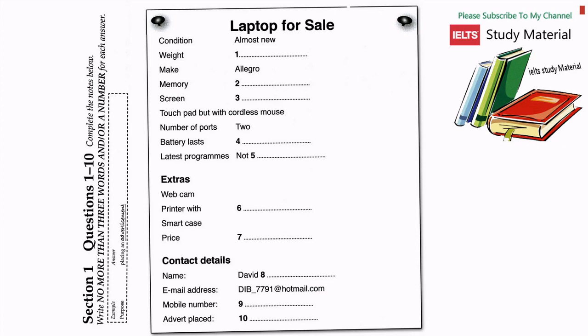Can I take some contact details for the advert? The name's David Bristow. B-R-I-S-T-O-W. Yes, that's it. And a mobile or email? Both, if you want. It's D-I-B underscore seven seven nine one at hotmail dot com. And the mobile? That's 09 875 423387. That's it. If you send the picture, I'll add it and print it out and stick it up for you. OK, I can get that to you today.